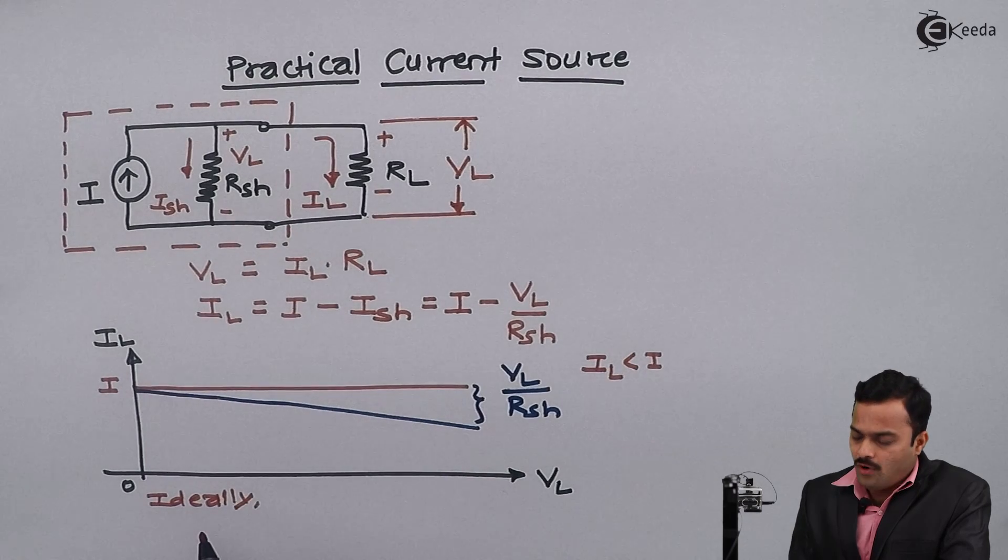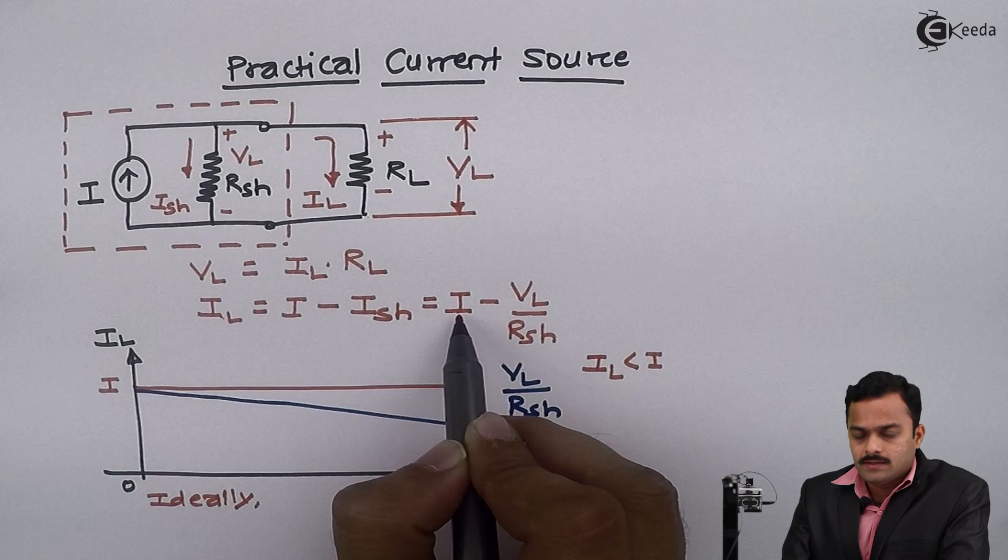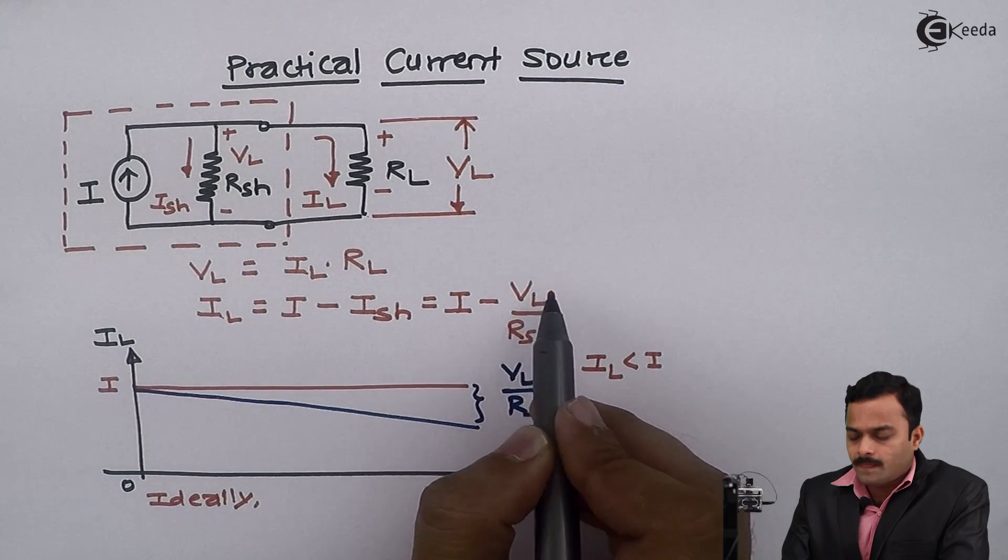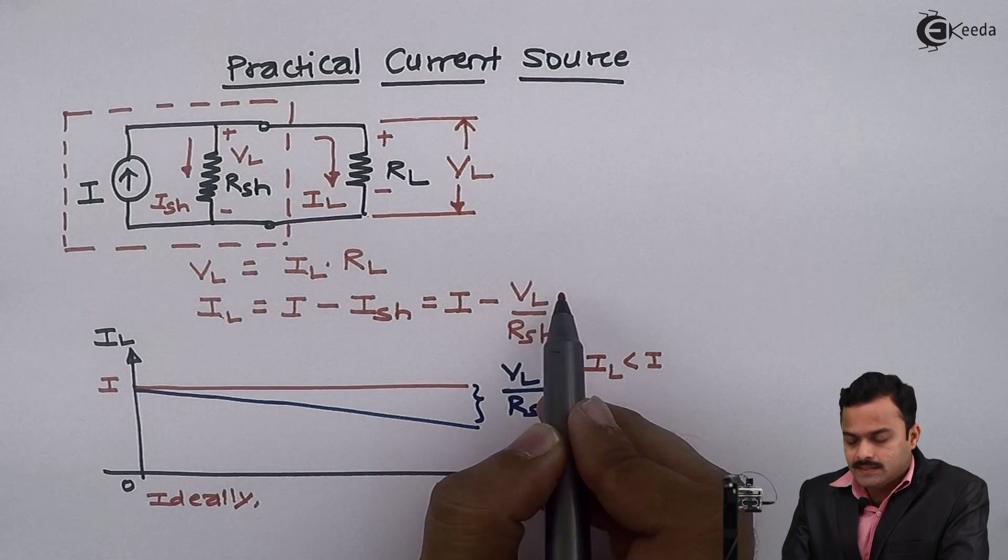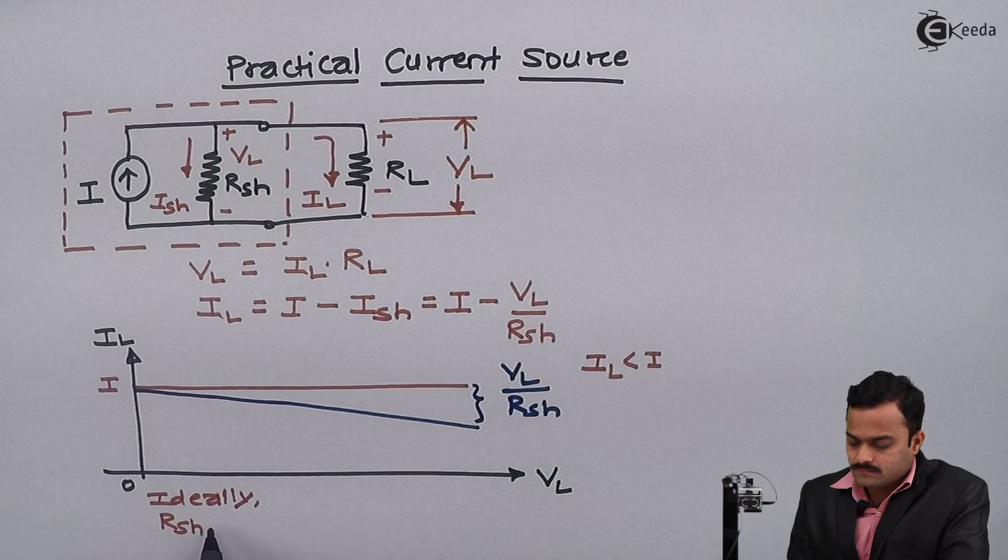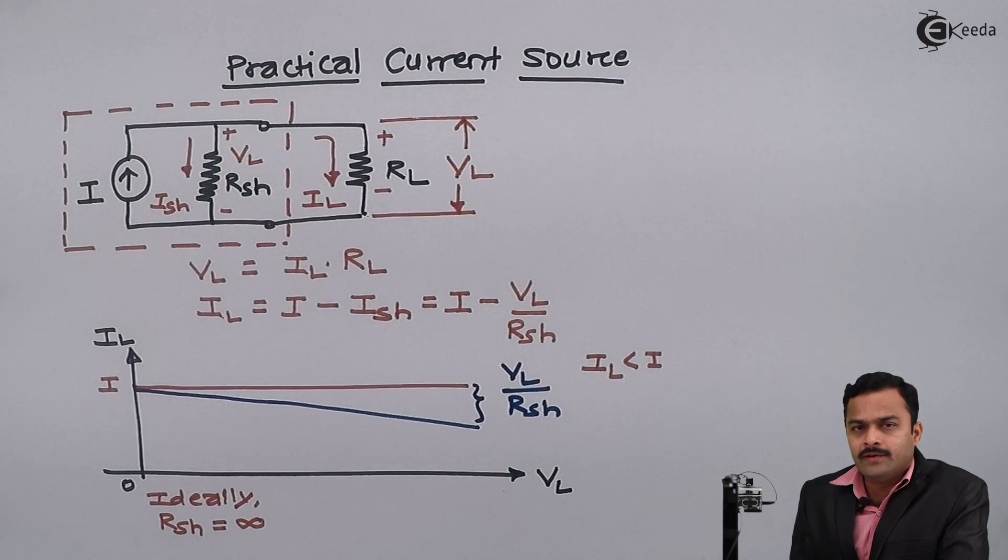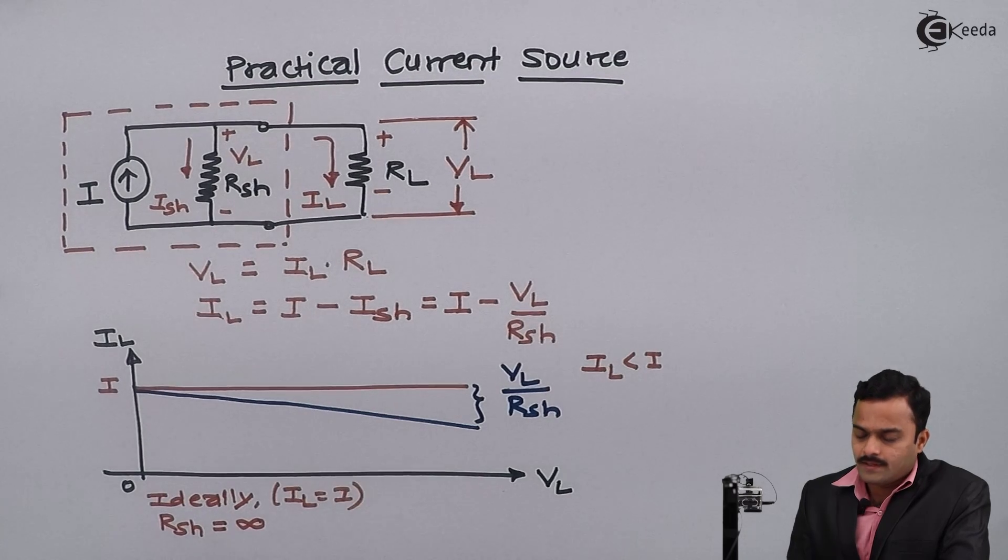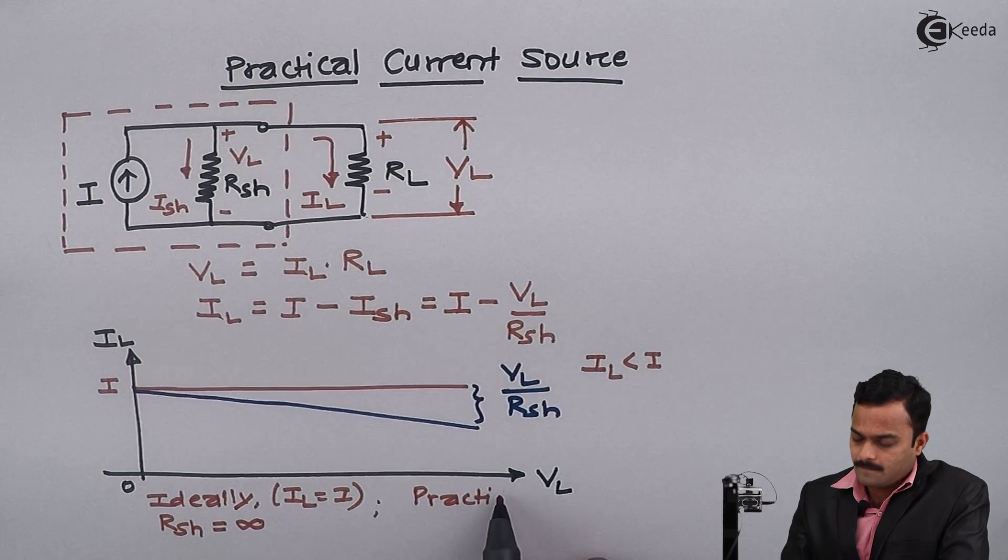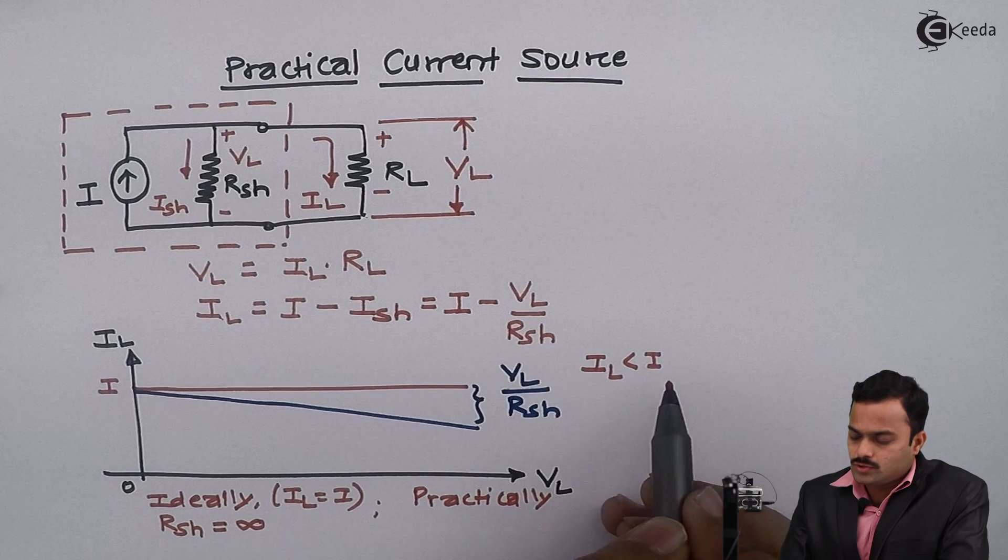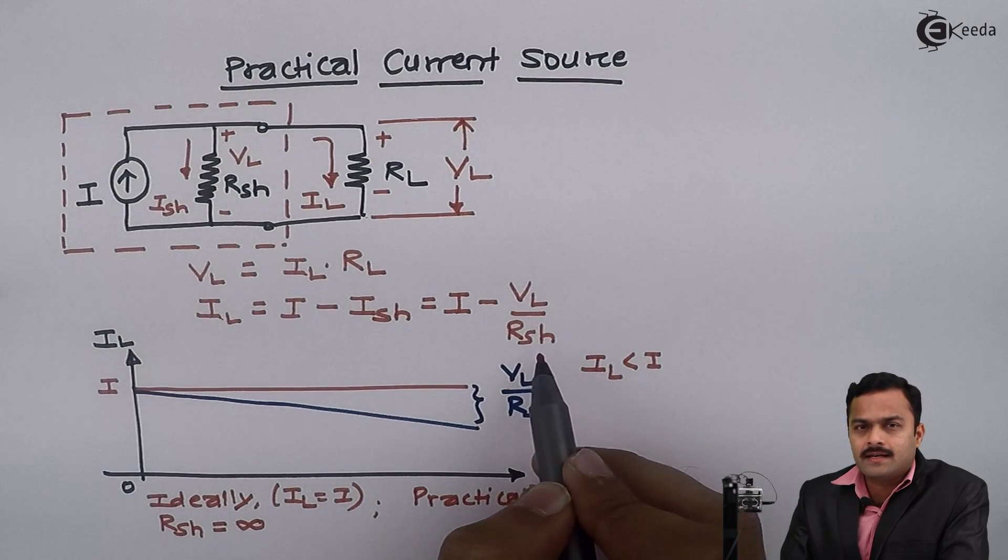Ideally I want IL same as I, so in ideal case this term should be 0. When this term will be 0 if the denominator is infinite, so that results ideally shunt resistance should be infinite in order to get IL same as I. But practically it is not possible, so practically I should have IL very close to I, so this Rsh should be as high as possible.